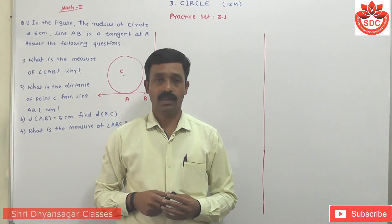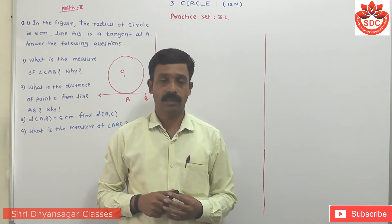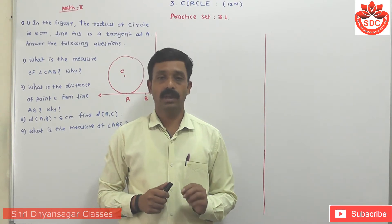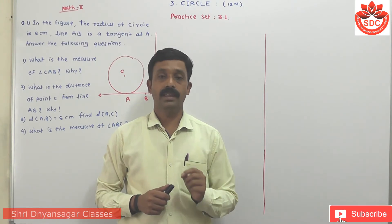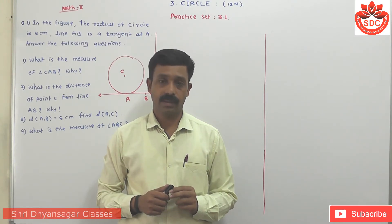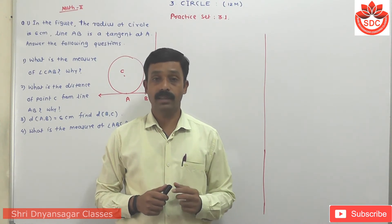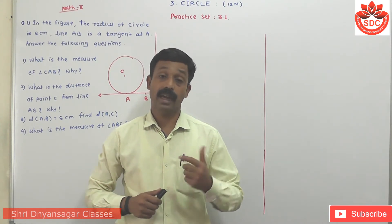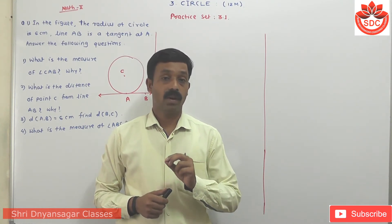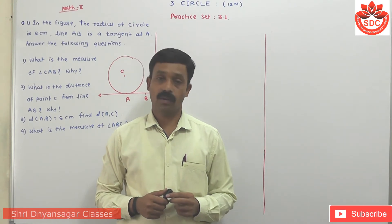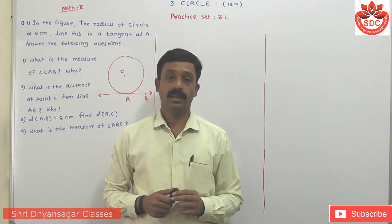Welcome to Srinayan Sakhar Coaching Classes YouTube Channel. To get more videos, please subscribe to this channel. Students, after this we discuss about the important theorems. The first one is the tangent theorem — tangent is perpendicular to the radius. Then its converse: the line perpendicular to the outer end of the radius is called the tangent to the circle. Third, tangent segments drawn from external points are equal. We use these three theorems to solve practice set 3.1.